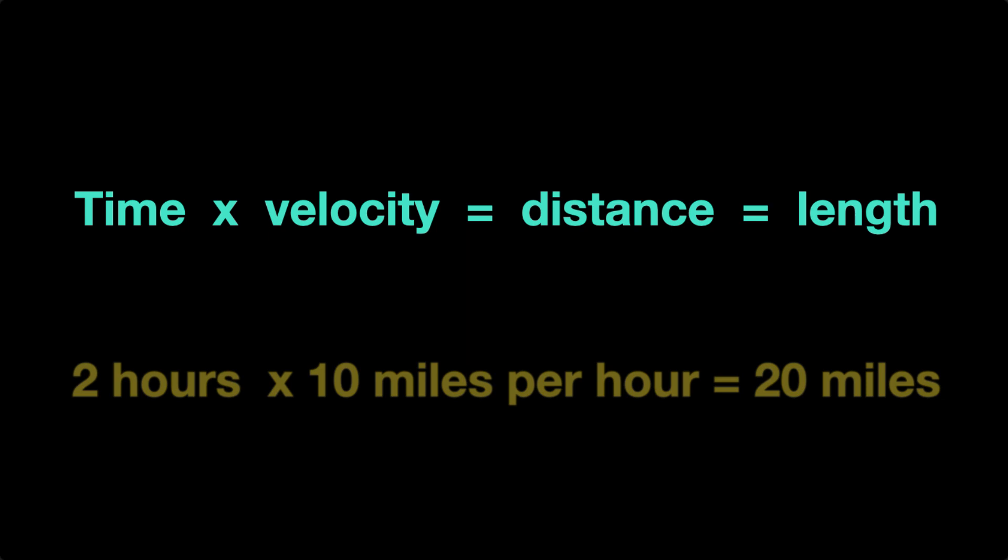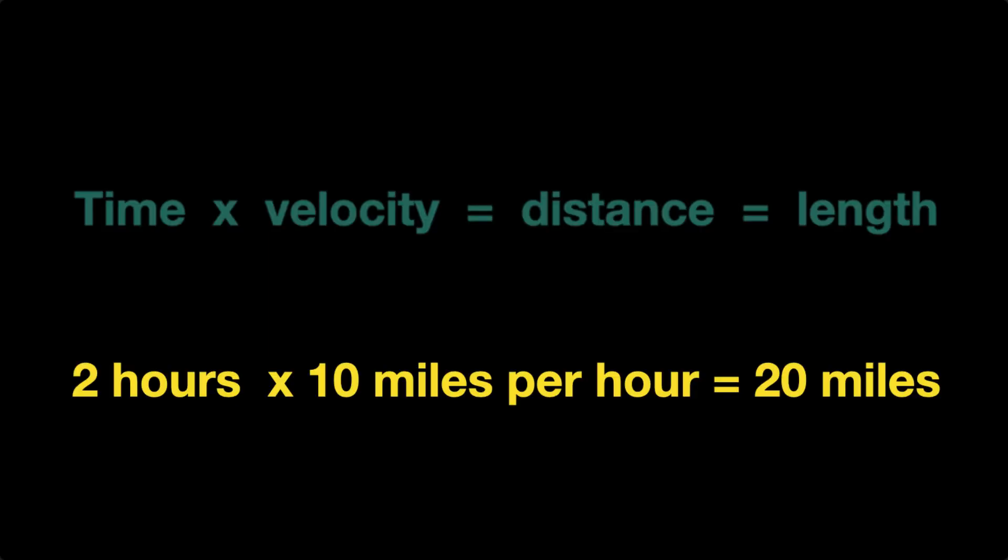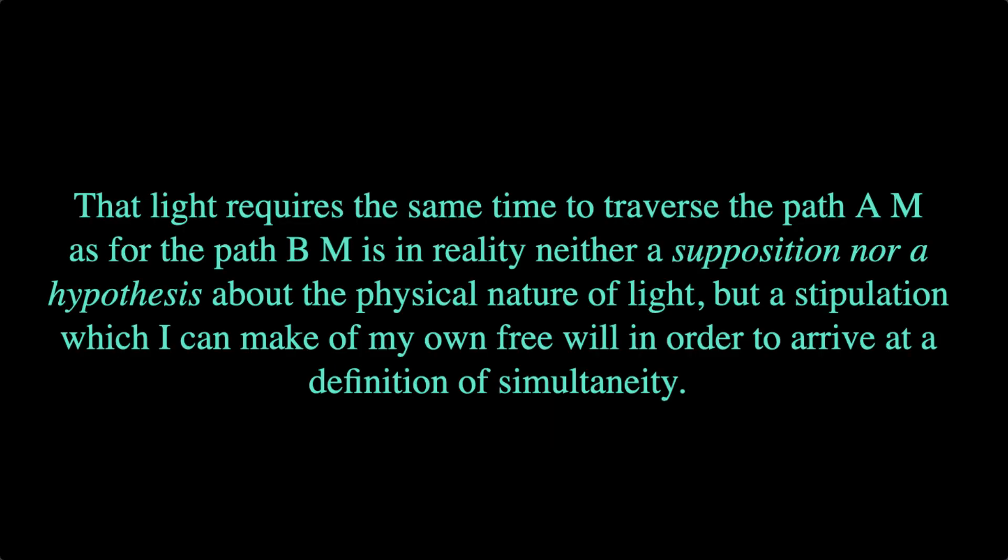So mathematician Minkowski reasoned like this: Time multiplied by velocity gives distance, which is a length. I think we can agree with that. Ten miles per hour multiplied by two hours gives twenty miles.